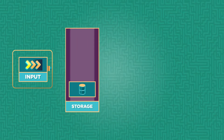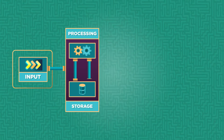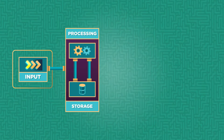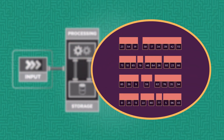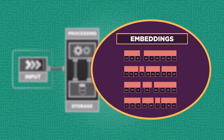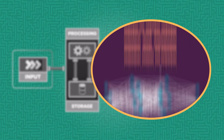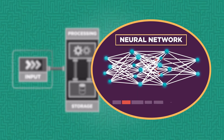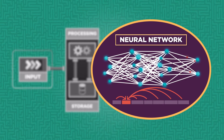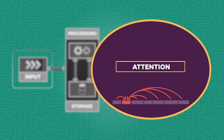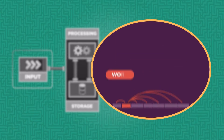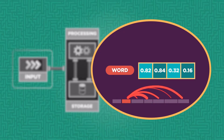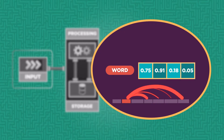So far we've looked at input, storage, and processing stages of how a language model works. Individual words and their approximate meanings are stored as embeddings, and these embeddings are processed by neural networks to determine the relationship between each word. This process, called the attention mechanism, repeats over and over again. It updates the meaning of each word using the context of other words around it.